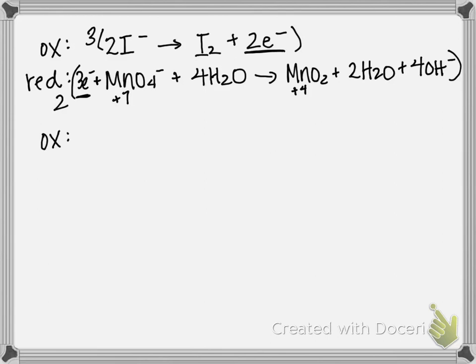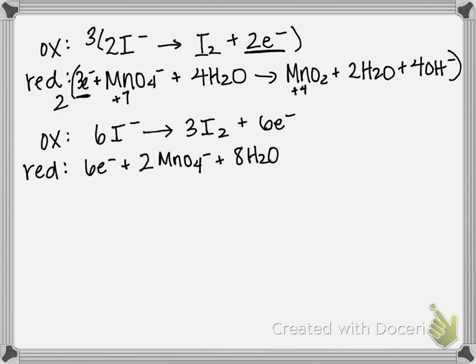Therefore giving me oxidation of 6 I minus produces 3 I2 plus 6 electrons. And in my reduction, it's going to be 6 electrons plus 2 MnO4 minus plus 8 H2O gives you 2 MnO2 plus 4 H2O plus 8 OH minus. So that is steps 4 and then step 5.